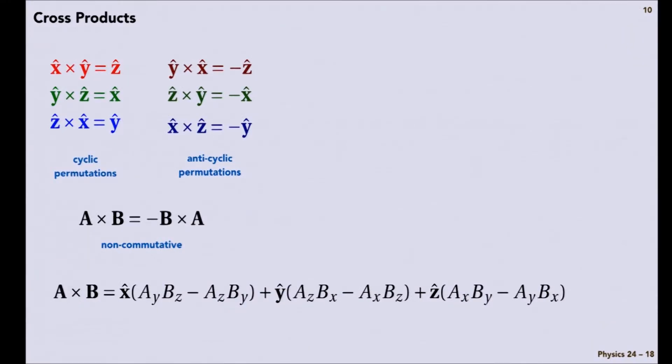So if I write this thing out in gory detail, vector A has components a sub x in the x direction, a sub y in the y direction, and a sub z in the z direction, and so forth. Then using these six relations, I would get these six terms.